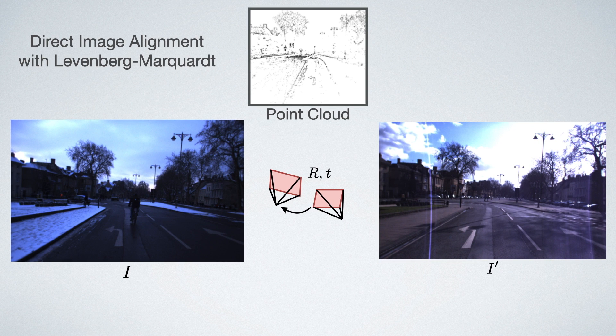Let's have a look at how direct image alignment works in general. The idea is to start with an initial solution for the rotation and translation and with that we can project the points from the point cloud from one image to the other.